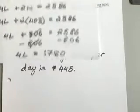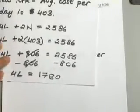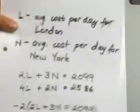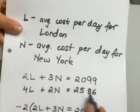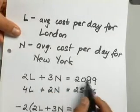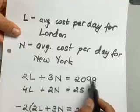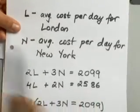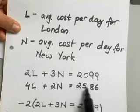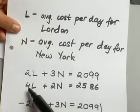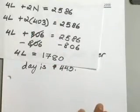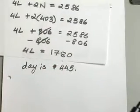And if you want to try and check your answers, you can go ahead and use the average cost for each city and put it back into your original equations that you had set up and make sure that you end up with 2099 for 2 days in London and 3 days in New York and with 2,586 for 4 days in London and 2 days in New York. You can go ahead and check your answers to make sure that both of them work.